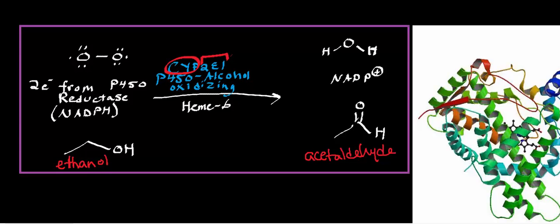That's a different P450 than CYP2E1. It turns out that the P450 enzyme, the particular one that metabolizes ethanol, is CYP2E1, and we're going to look at this particular P450's alcohol oxidizing activity that generates acetaldehyde.